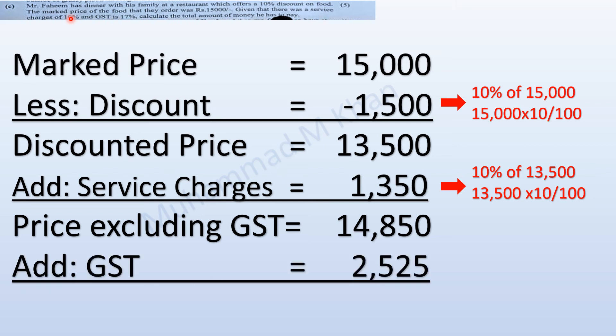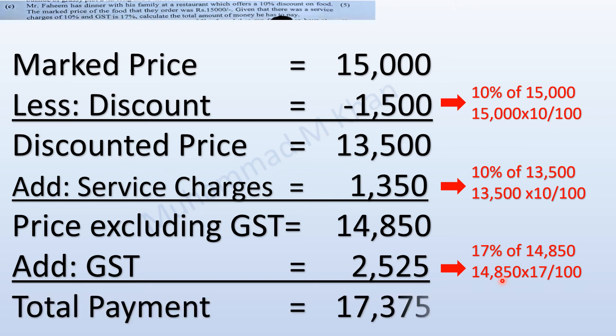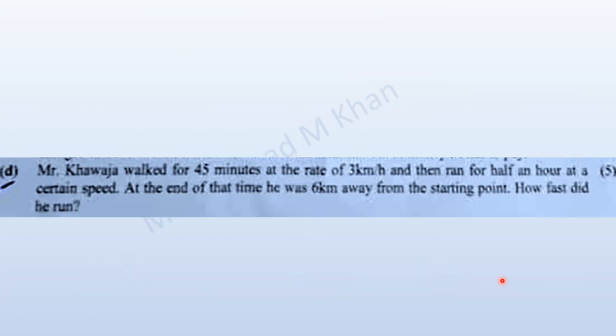The rate of GST is given as 17 percent. Calculating 17 percent of 14,850 gives us 2,525 (rounded to the nearest rupee). Adding 14,850 with 2,525 results in 17,375, which is the total amount Mr. Fahim has to pay for the food ordered.